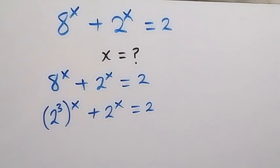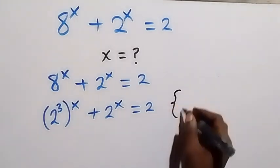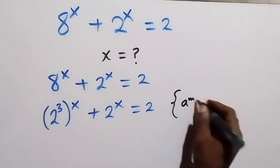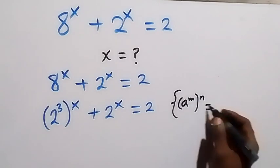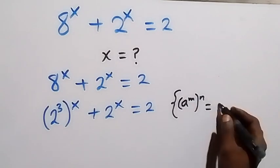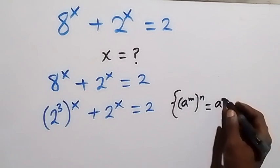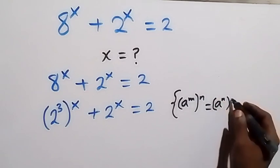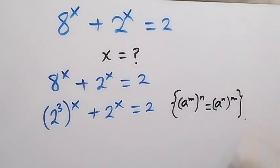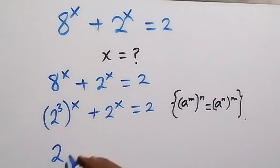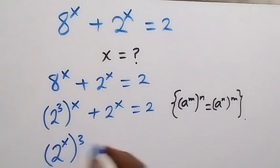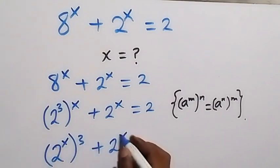From the law of indices, we have a raised to power m, then raised to power n — since the powers multiply, we can bring n inside: a raised to power n, then raised to power m. So we can bring the 3 out and take x inside, giving us 2 to the power of x, then to the power of 3, plus 2 to the power of x equals to 2.